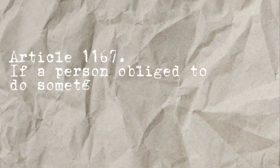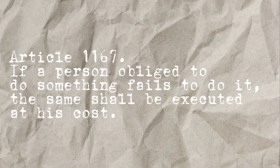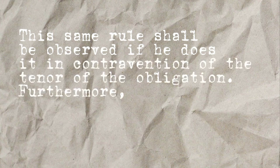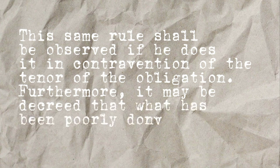Article 1167: If a person obligated to do something fails to do it, the same shall be executed at their cost. This same rule shall be observed if he does it in contravention of the tenor of the obligation. Furthermore, it may be decreed that what has been poorly done be undone.